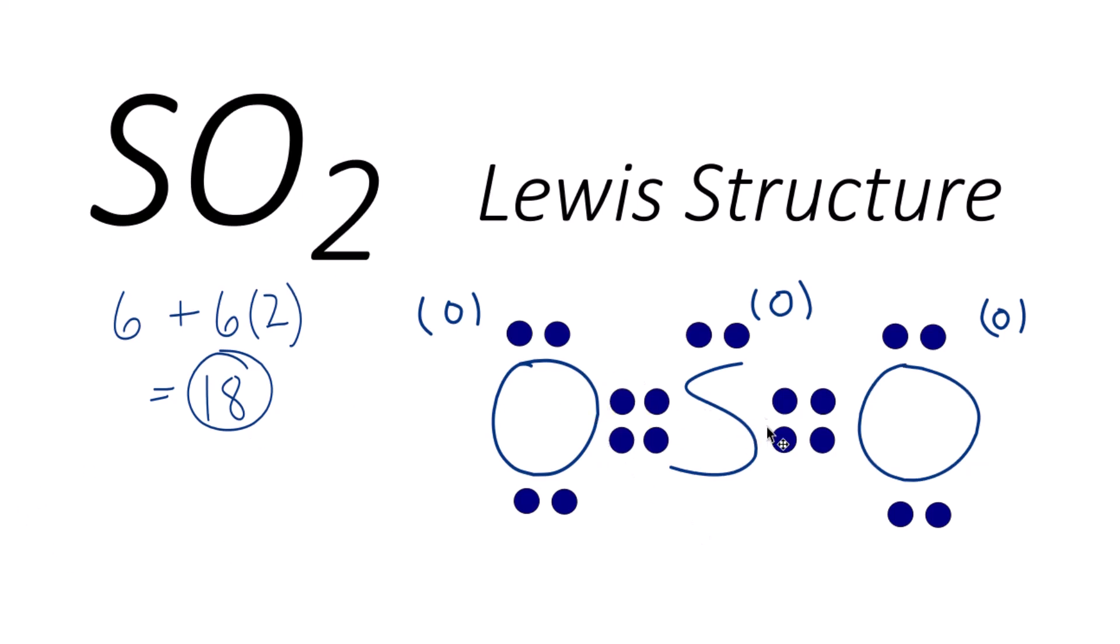Students get confused because we have more than eight on the sulfur, but that's okay. Another question is, which is more important, the octet rule or the formal charge? So the octet rule is a very general rule. So we would rather have the formal charges work out than strictly following the octet rule. So that's why we have 10 on the sulfur and expanded octet. So this is the most favorable or likely Lewis structure for SO2.